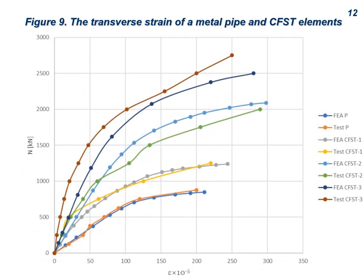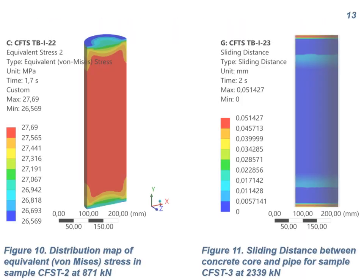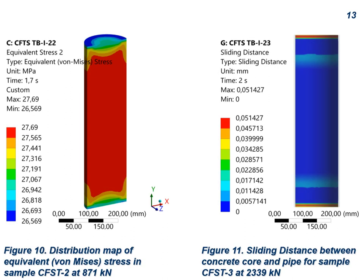This allows us to conclude that the proposed method can be used to predict the strength characteristics of CFST elements. The proposed method also made it possible to look inside CFST elements and obtain data that is difficult to obtain as a result of laboratory tests. The stress distribution patterns inside the CFST components at different loading levels are obtained. For example, Figure 10 shows the distribution of equivalent stresses for sample CFST2 at a load of 871 kN.